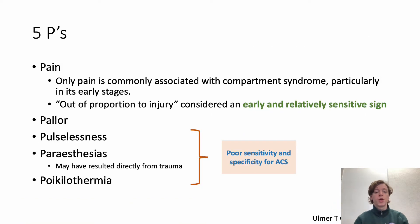Considering the five Ps: pain is the only one commonly associated with compartment syndrome, especially in the early stages — pain out of proportion to injury is an early and sensitive sign. Pallor, pulselessness, paresthesias, and poikilothermia (change in temperature with the limb being cooler) have poor sensitivity and specificity for ACS.